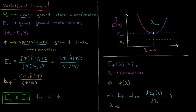Here's where the variational principle comes in. The variational principle says that the energy of any approximate ground state wave function is greater than or equal to the exact ground state energy, for all trial wave functions. No matter which wave function you choose, for this Hamiltonian operator you can never get a lower energy than the exact ground state. We won't prove that here — it can be proven without too many lines — but we'll move on.